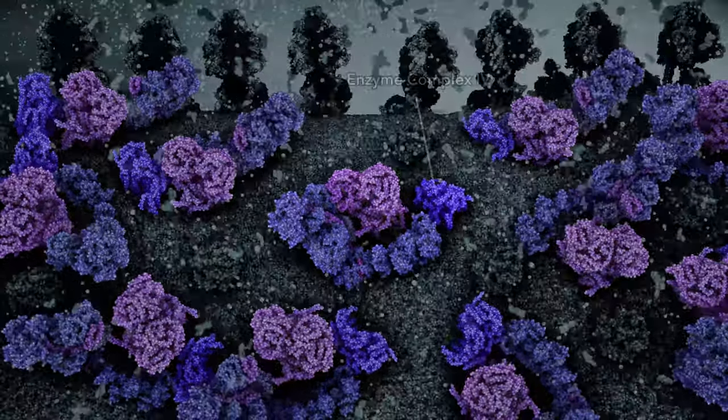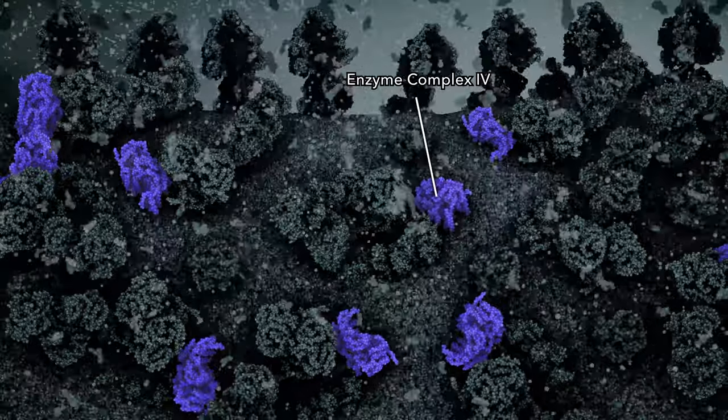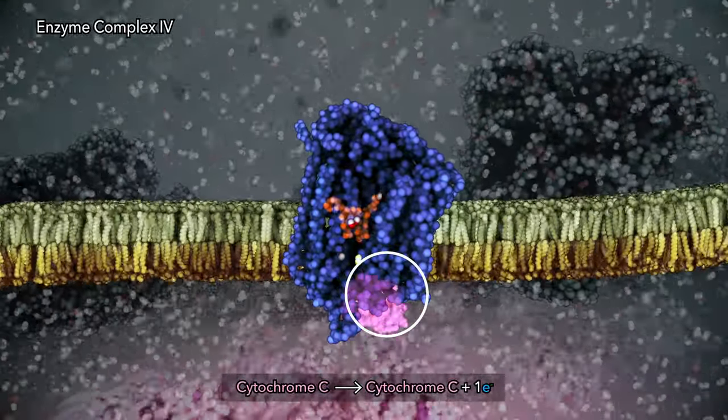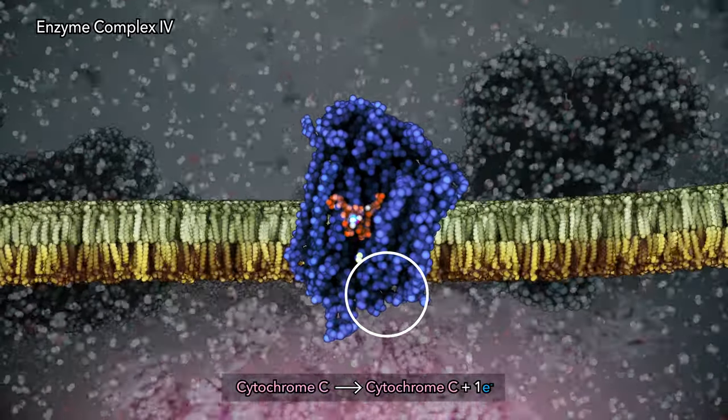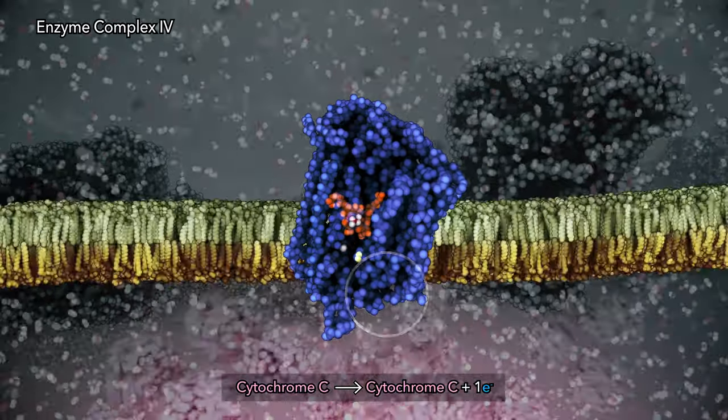The destination for electron transport is a molecule of oxygen held inside enzyme complex 4. Reduced cytochrome C delivers electrons that transfer to the reaction center of enzyme complex 4.